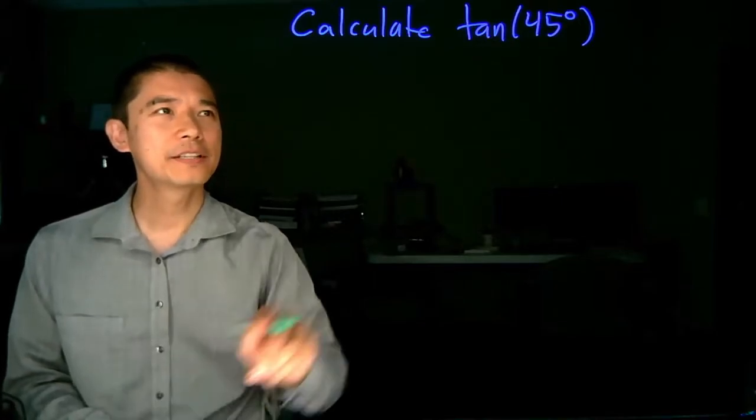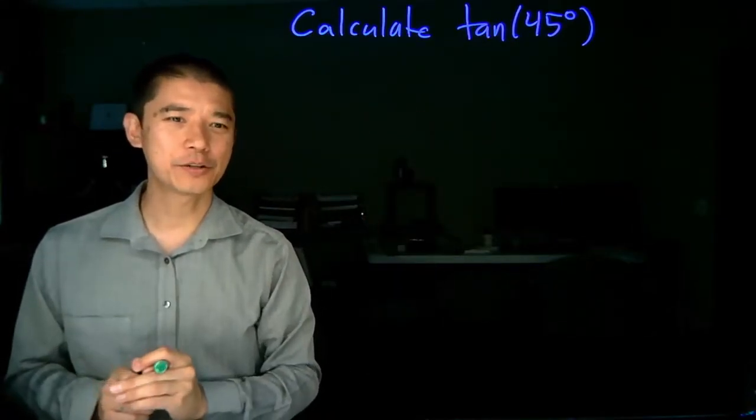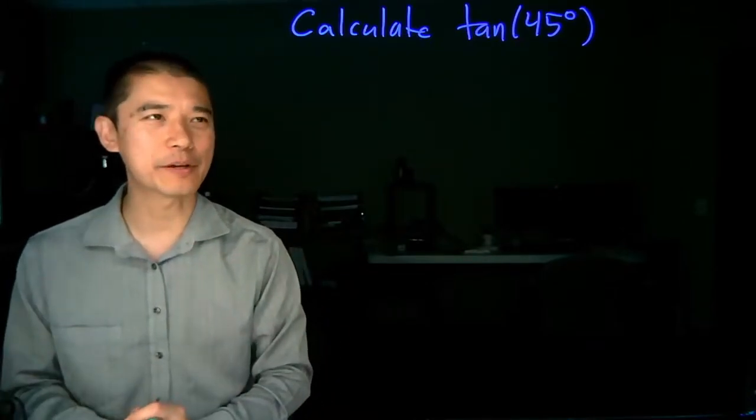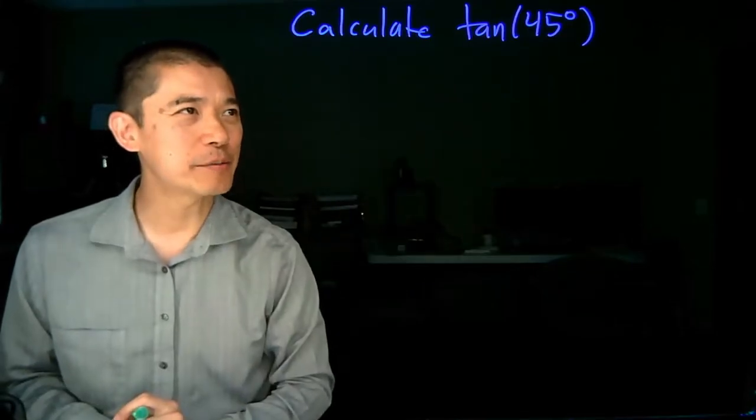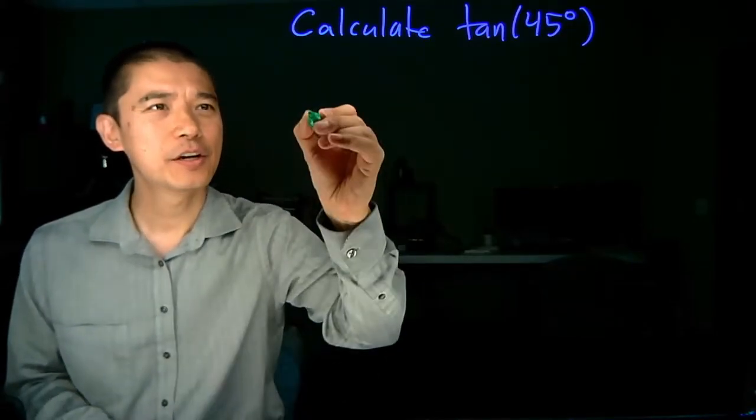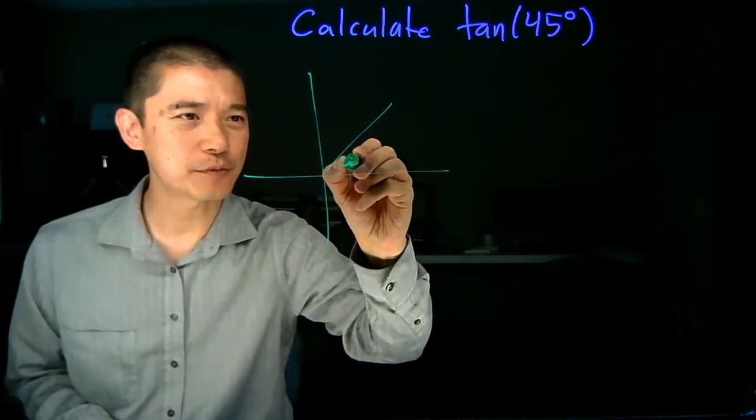So here's an example. Calculate tangent of 45 degrees. We're going to do this two different ways. We're going to do it once using the geometric method and once using a more algebraic method. So, the geometry. Tangent of 45 degrees. What are we thinking about geometrically here? Well, geometrically, we're thinking about the plane, and we're thinking about this 45 degree angle.